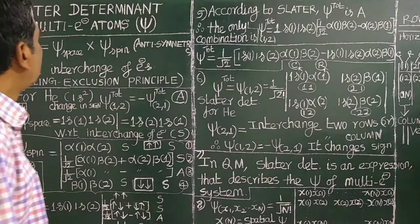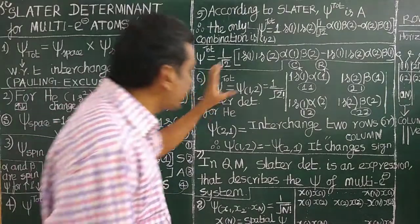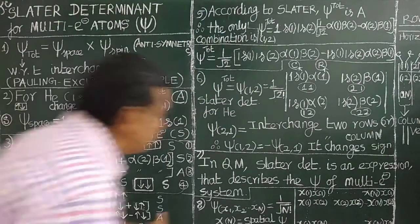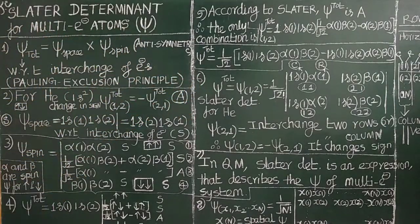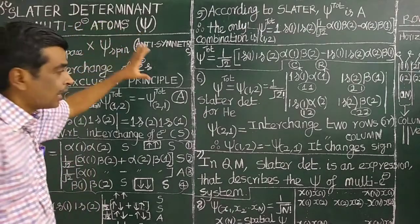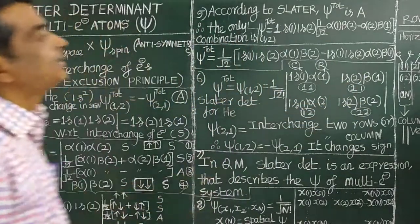Good morning. Today, let us study about the Slater Determinant. What is the Slater Determinant? How it is derived for the helium atom, lithium atom, and for multi-electron atoms? It was proposed by J.C. Slater in 1930. The wave function of a multi-electron atom is represented in determinant form, called the Slater Determinant.